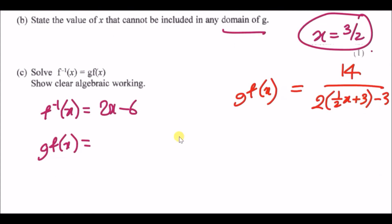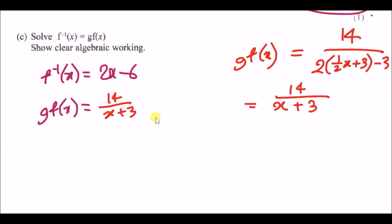Expanding carefully: you get 14 over — expanding the denominator, 2 times half x is x, and 2 times 3 is 6, minus 3 gives plus 3. So gf(x) = 14 over (x + 3). Now the equation tells us to equate f⁻¹(x) and gf(x) and solve.